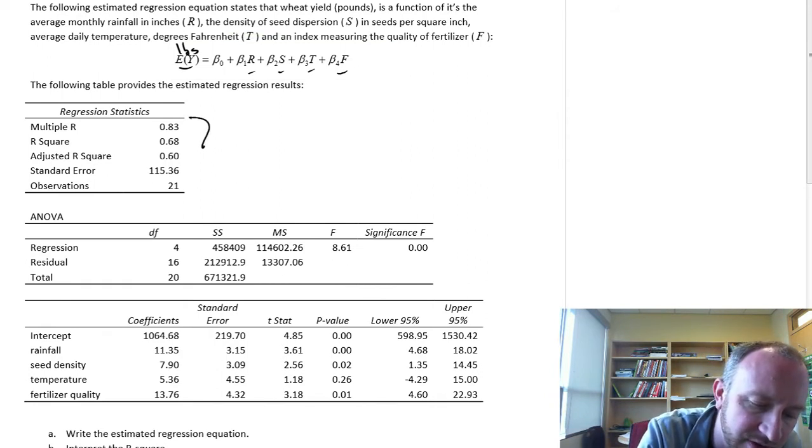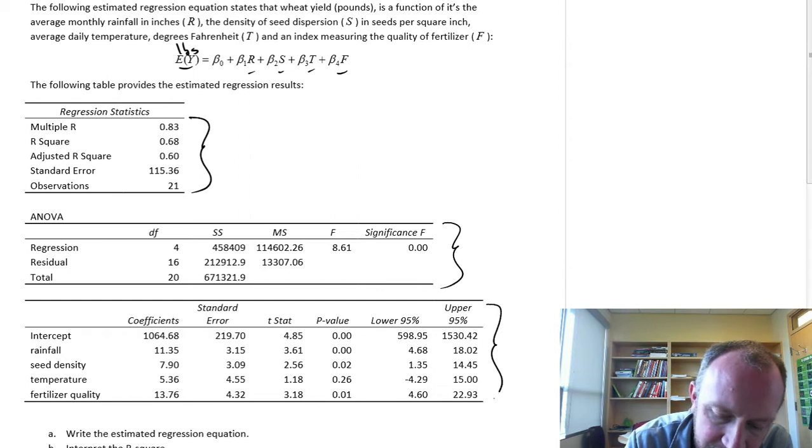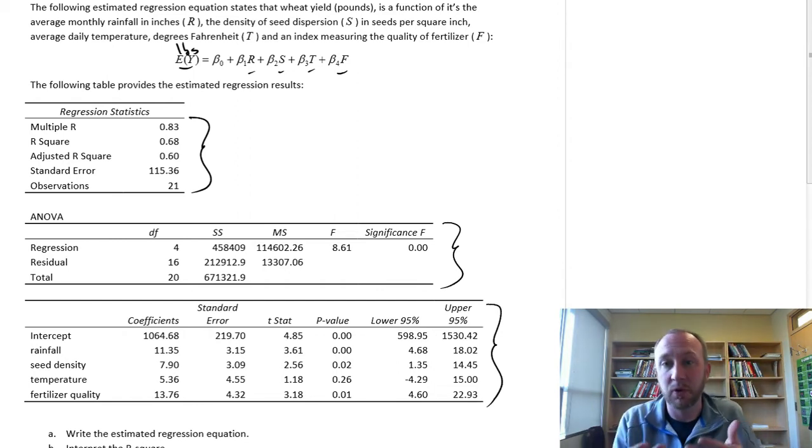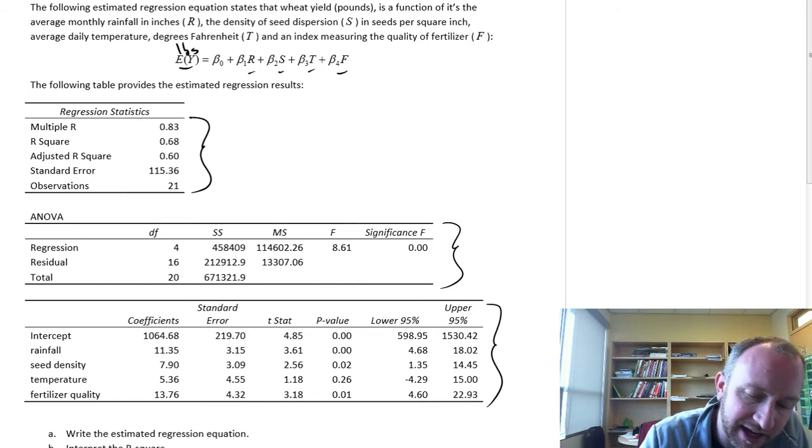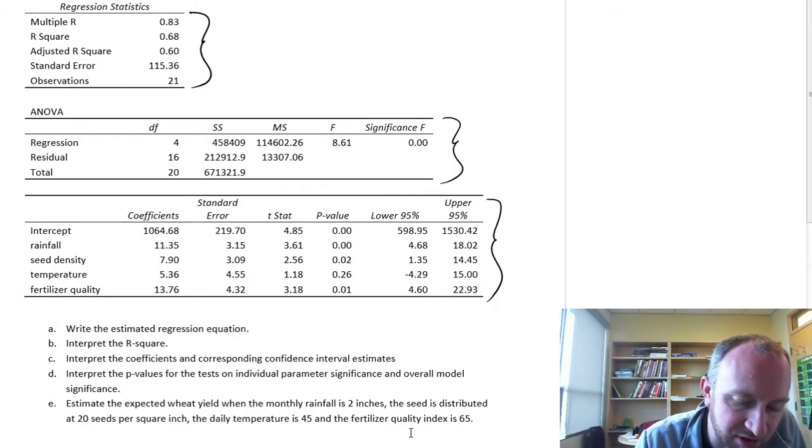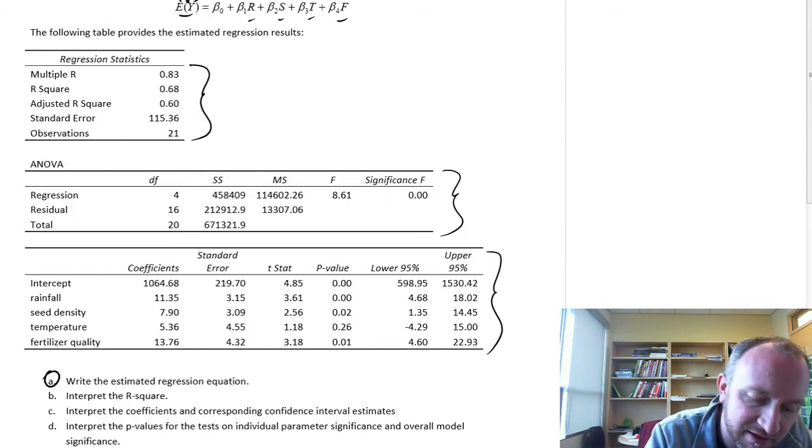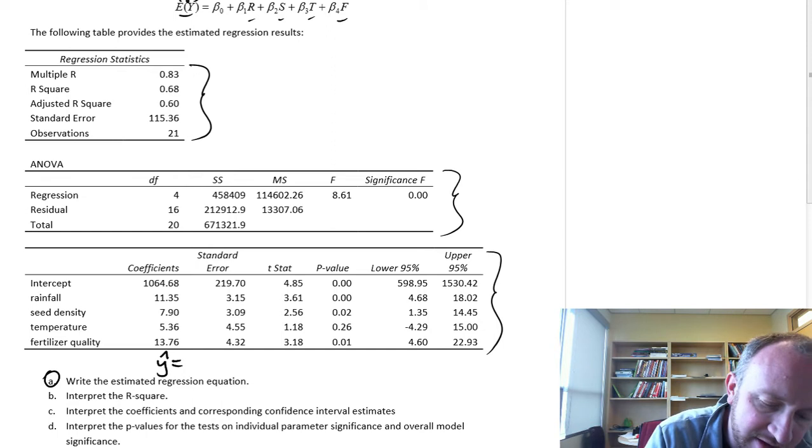As we go down here we have all of our regression statistics, our ANOVA information, and here's all of the information for our estimated regression equation, which for part A is simply write the estimated regression equation. For this, all we have to do, this is going to be y hat equals...